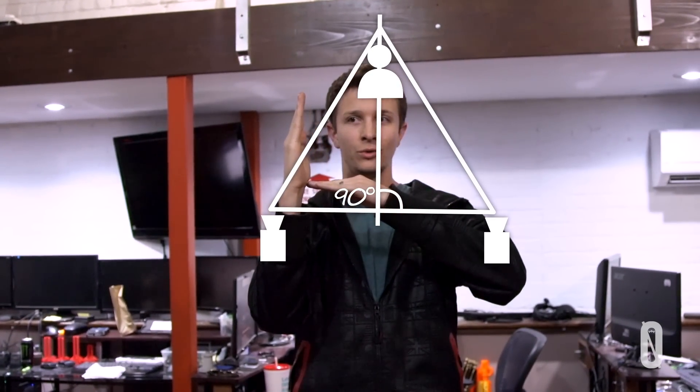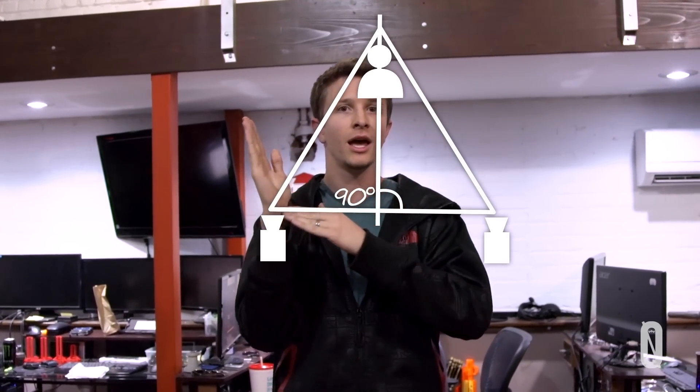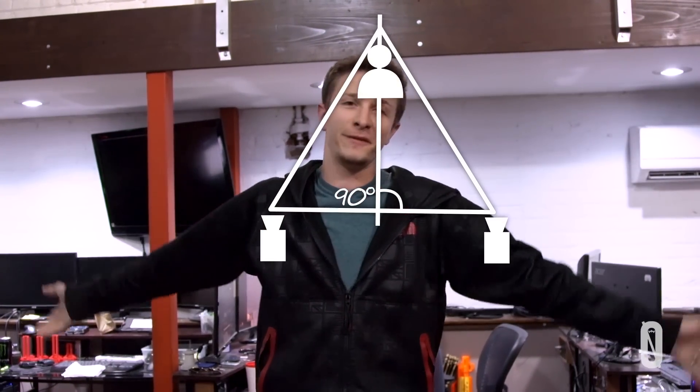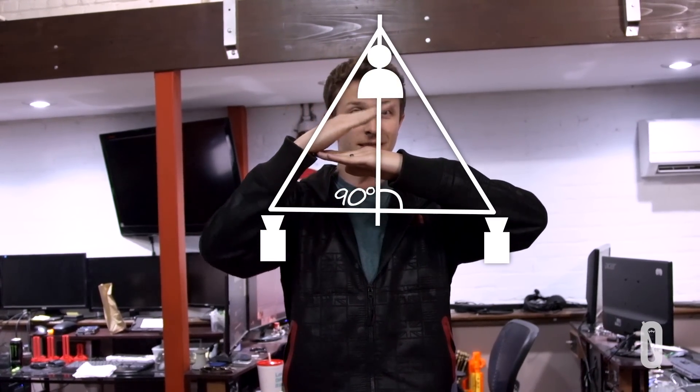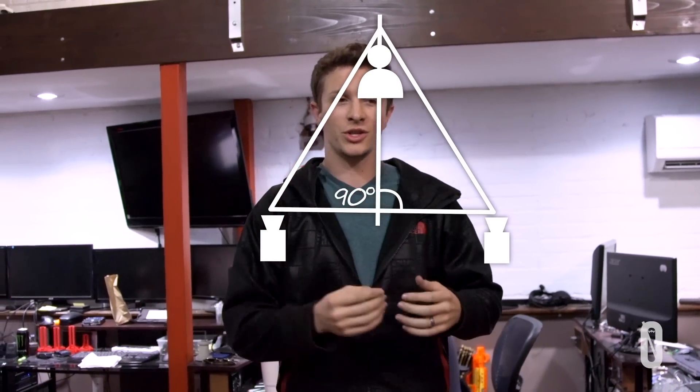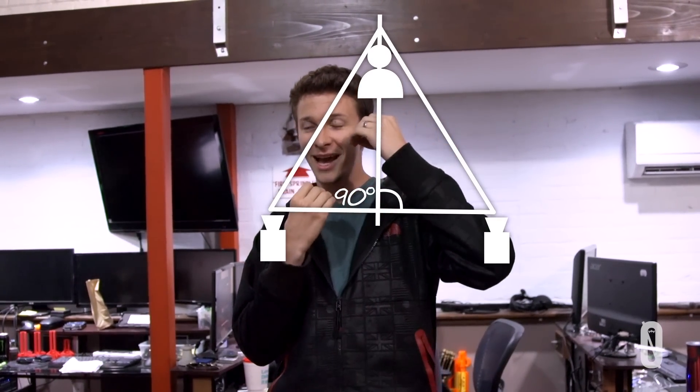So this angle here - the more it gets closer to 90 degrees, which would be a line, you get this number that's like infinite. And the closer it gets to zero, you get zero. So you can use that as a relationship for the number of pixels to offset.